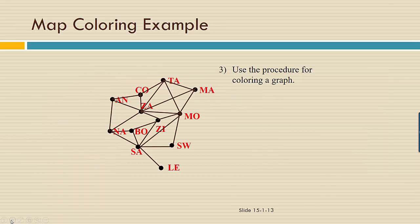So next, we're going to use the procedure for coloring a graph which guarantees that no two vertices joined by a single edge are colored with the same color, and then that will allow us to color our map so that no two regions joined by a boundary are the same color.